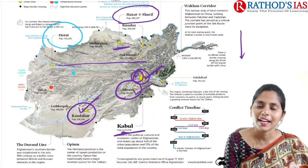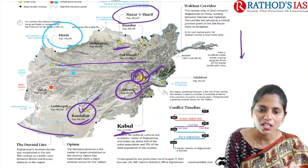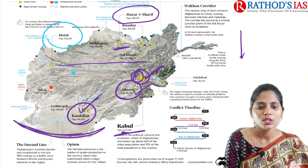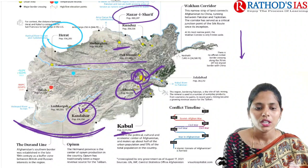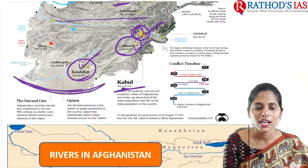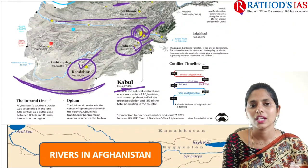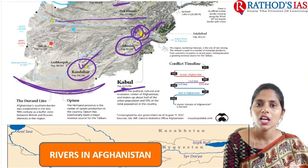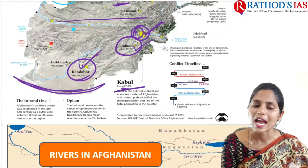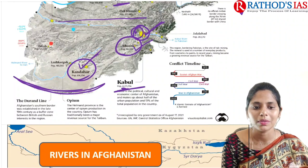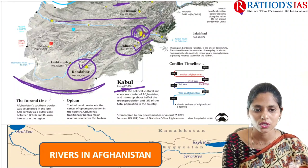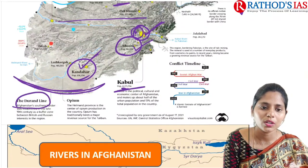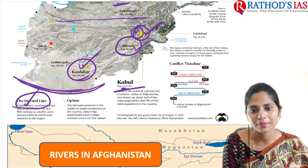The line mainly present on Afghanistan's southern border is the Durand Line. You have to remember this line. The Durand Line came into being mainly in the late 19th century and mainly acted as a buffer zone between British and Russian interests in this region at that time.